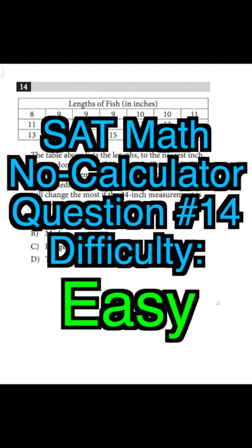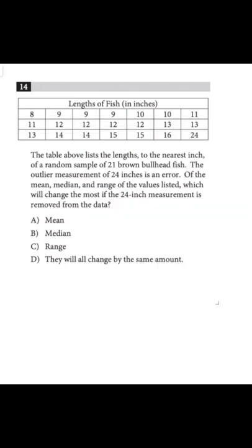SAT math difficulty level easy. The table above lists the lengths to the nearest inch of a random sample of 21 brown bullhead fish. The outlier measurement of 24 inches is an error.